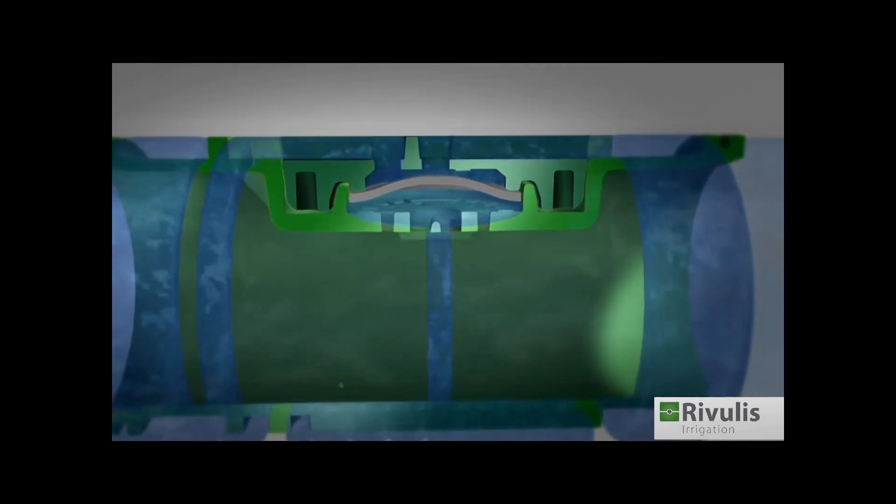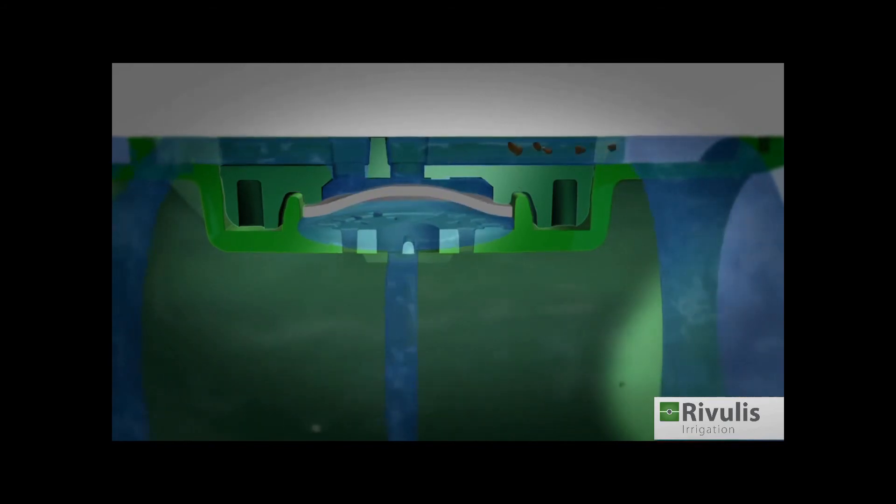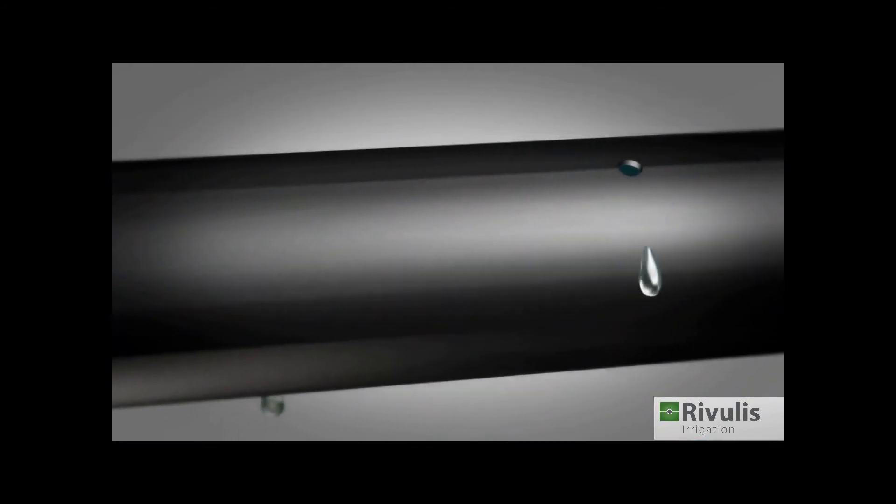When the particles accumulate in the regulating chamber, the self-cleaning mechanism kicks in. The decreased flow rate changes the pressure on the upper side of the diaphragm, pushing it down, expanding the path and allowing the increased flow to flush out the particles.